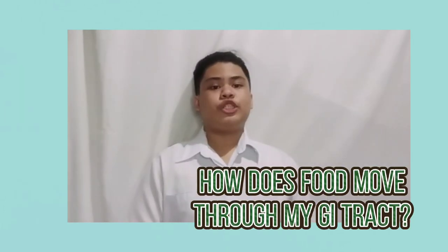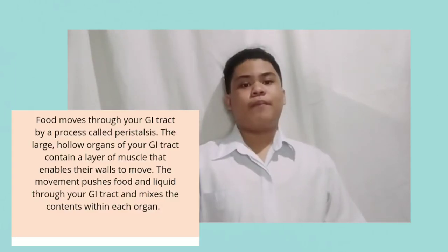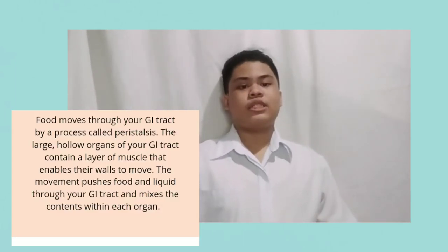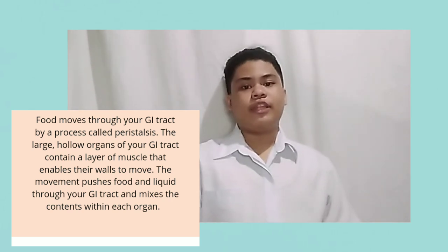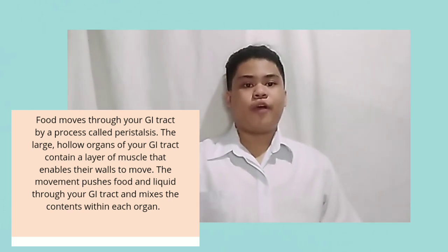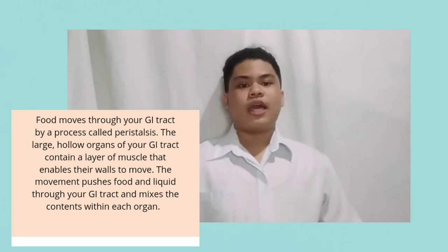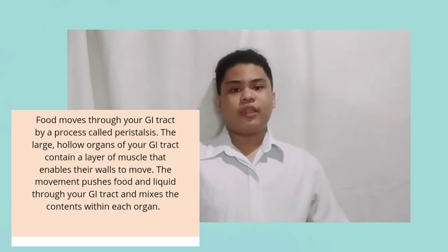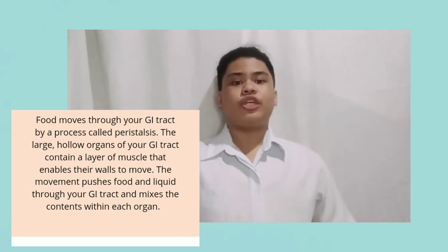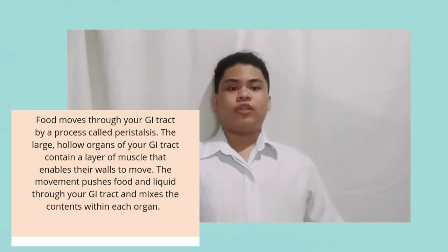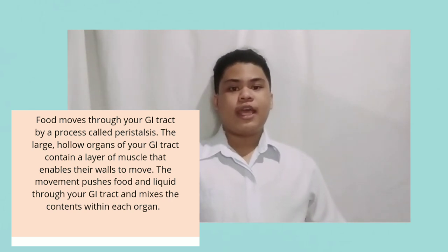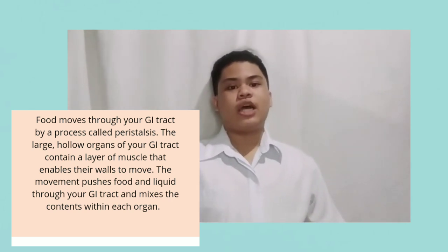Food moves through our GI tract by a process called peristalsis. The large hollow organs of the GI tract contain a layer of muscle that enables their walls to move. The muscle behind food contracts and squeezes food forward, while the muscle in front of the food relaxes to allow food to move through.